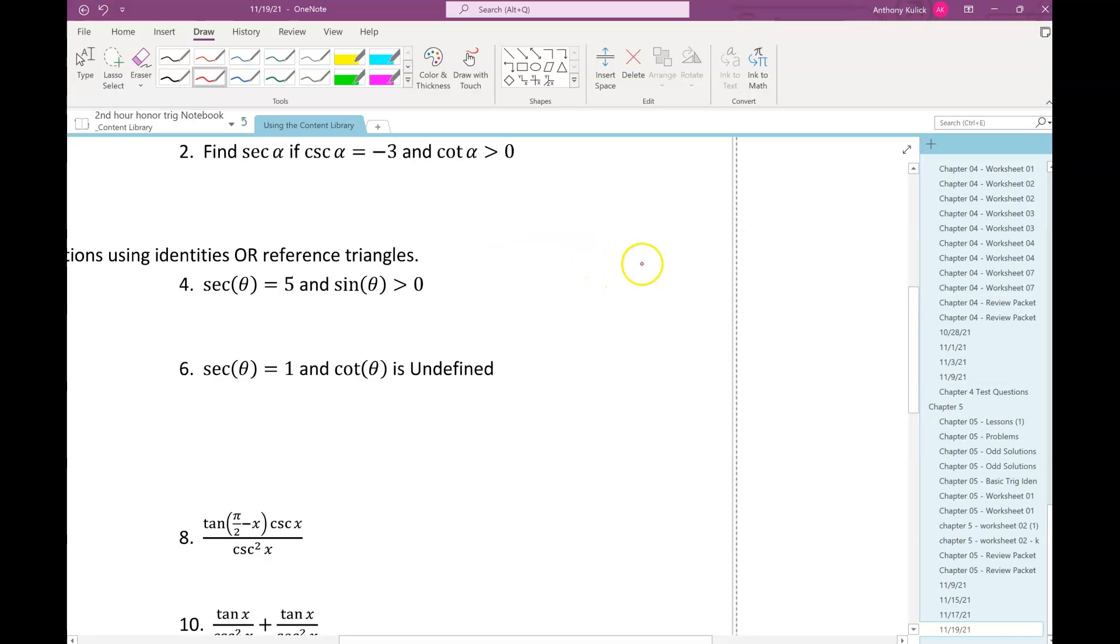All right. So, looking at number four. Right away, if I know secant is five, I know cosine is one-fifth, because they're reciprocals, right? That's, I used an identity to do that. Cool. Next, what I'm going to do, I observe that since sine is positive, I know its reciprocal also has to be positive. So, I can say, I know that cosecant is also positive, right?